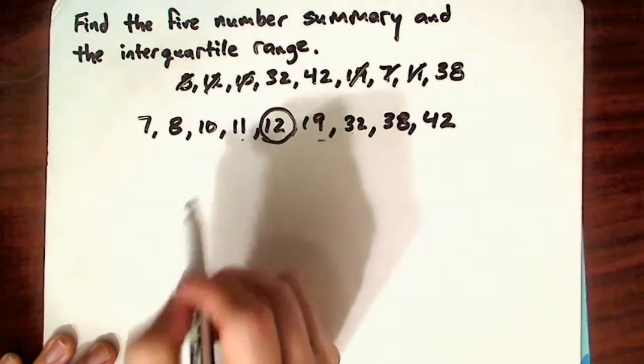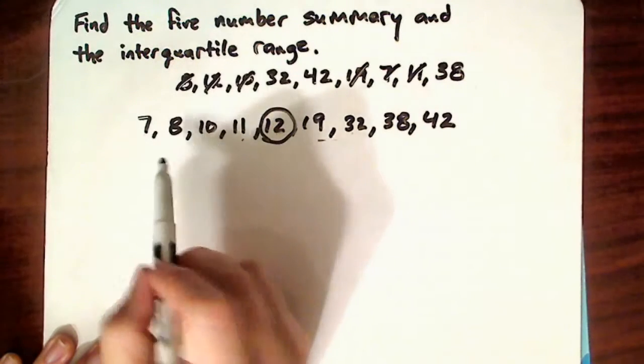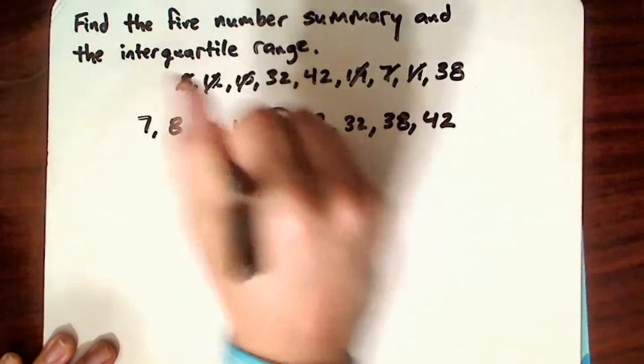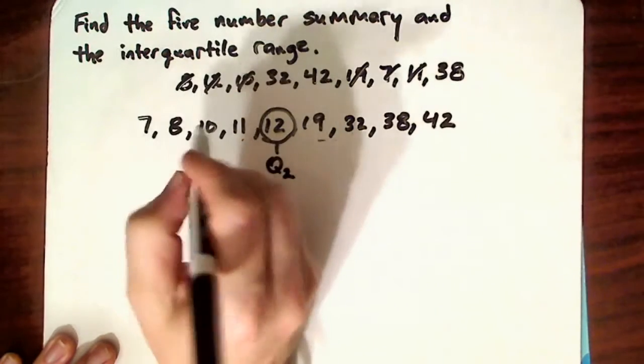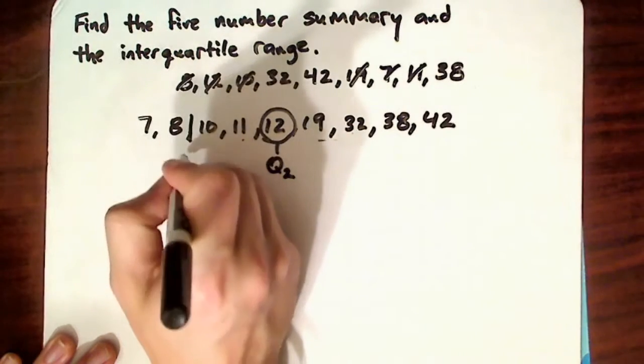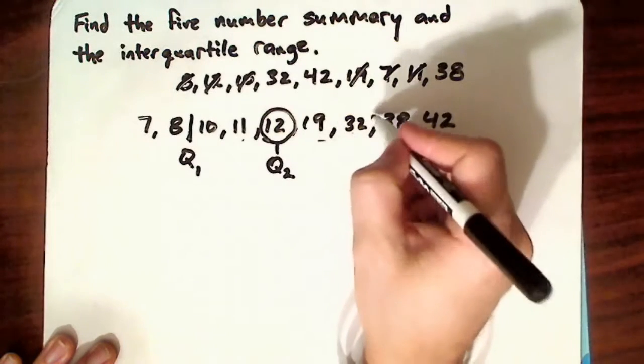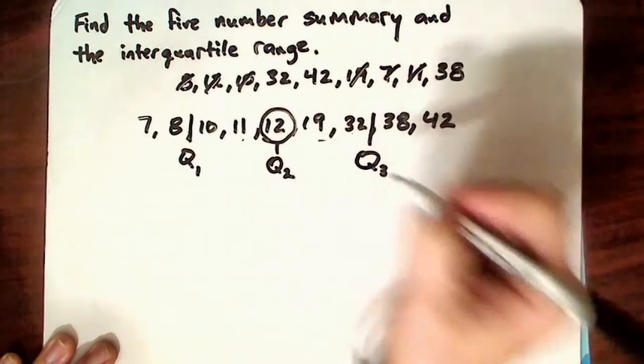Then how can you find the quartiles, the other quartiles? Either it's going to be in between two numbers or it's going to be a number. So that's the second quartile. The first quartile is in between those two. And then over here, the third quartile is in between those two.